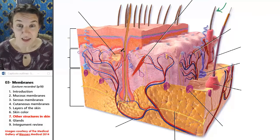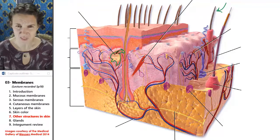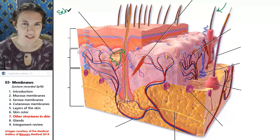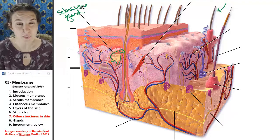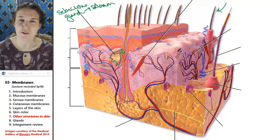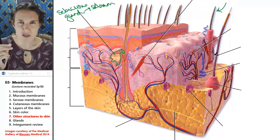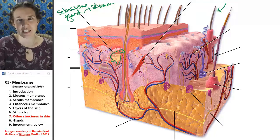Associated with hair follicles are a couple of super interesting structures. One of them is a gland — you'll notice it has an opening right here into the hair follicle itself. That is a sebaceous gland. We'll talk about types of glands in the next section, but this sebaceous gland produces a substance called sebum, which is this kind of oily stuff that lubricates the hair and helps it get out of its follicle.